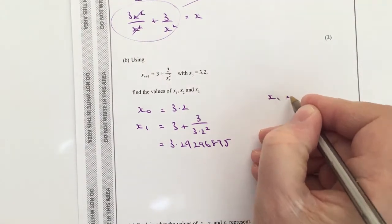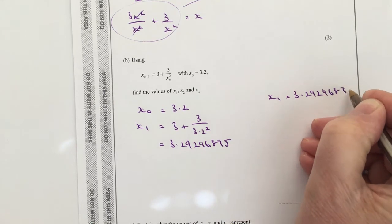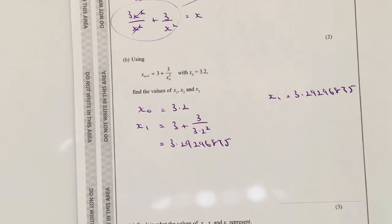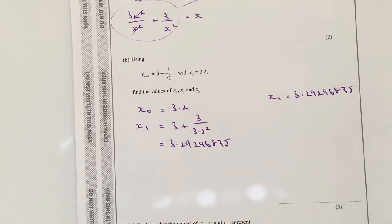So I can write that off to one side: x1 equals 3.29296875. Now it doesn't give any guidance in terms of the amount of decimal places that you need, so if I were you, I would just write it all out in its entirety, and then you should be able to get the marks for this.